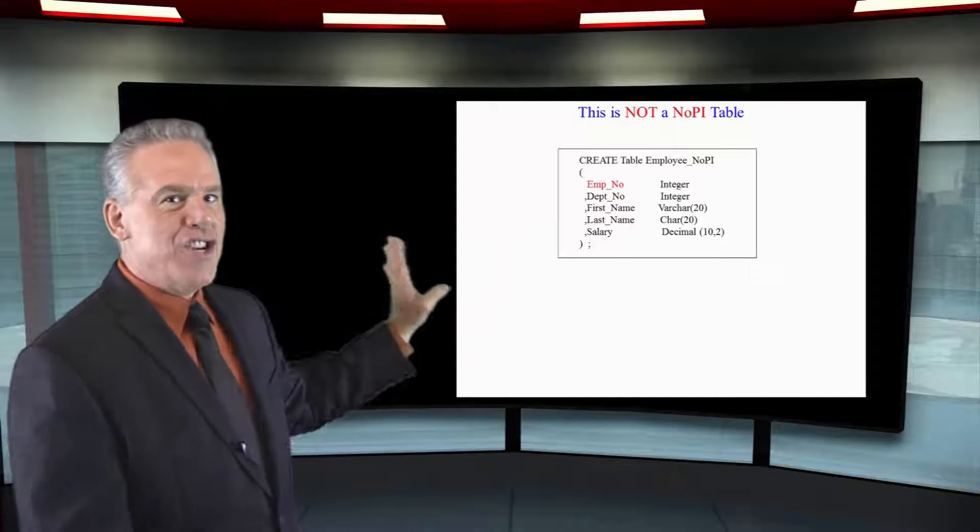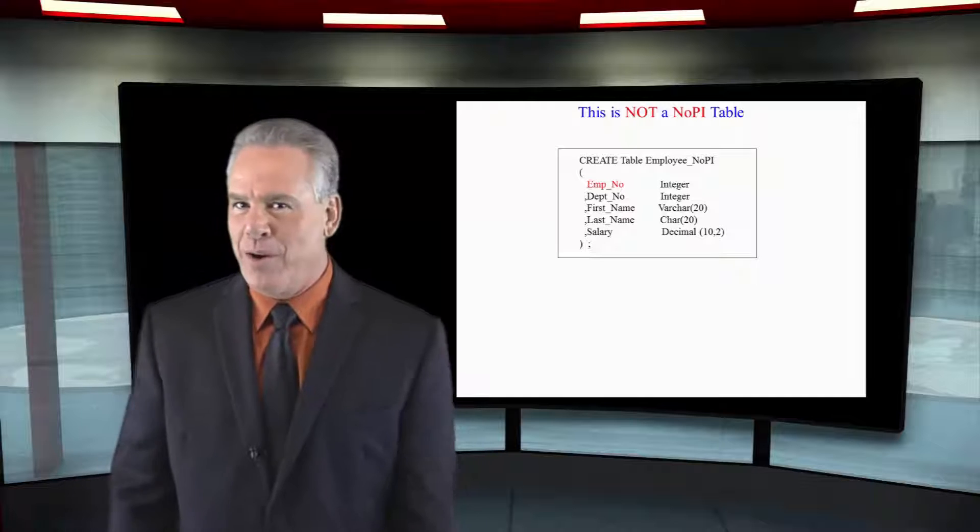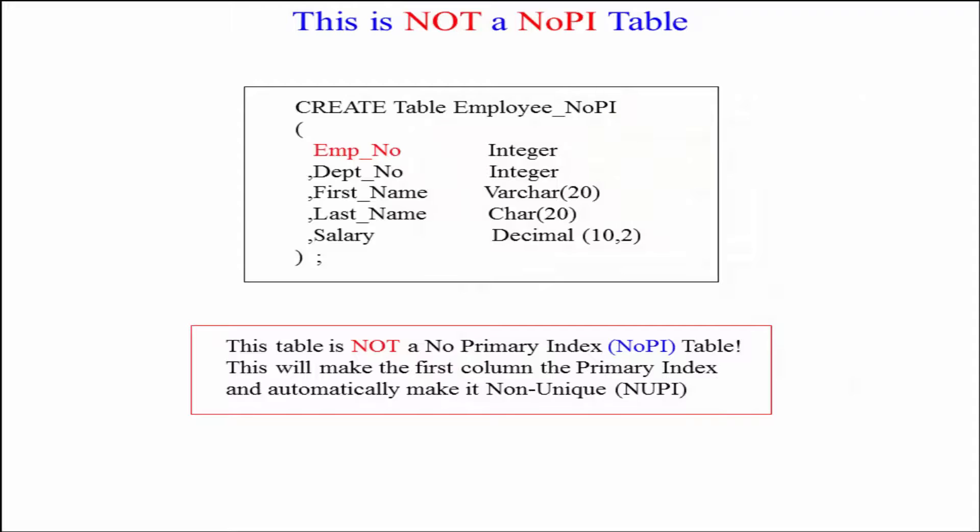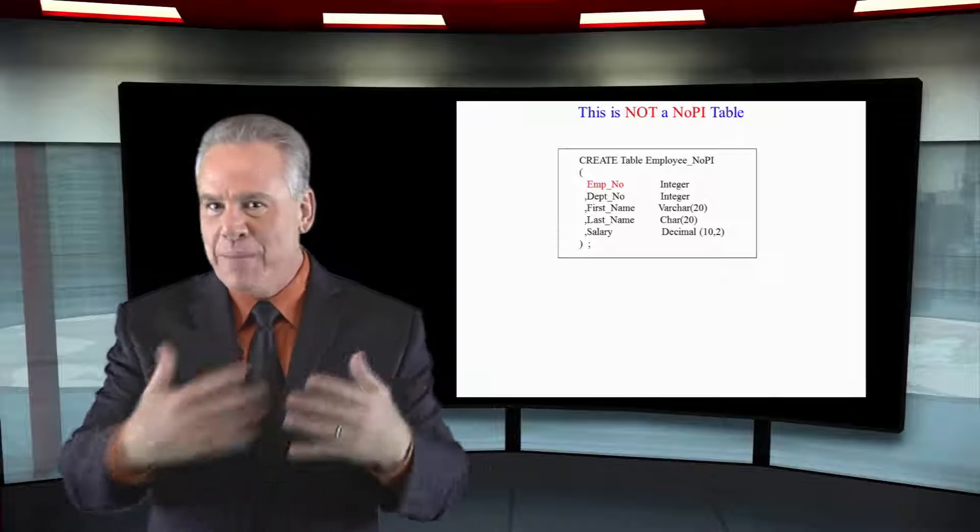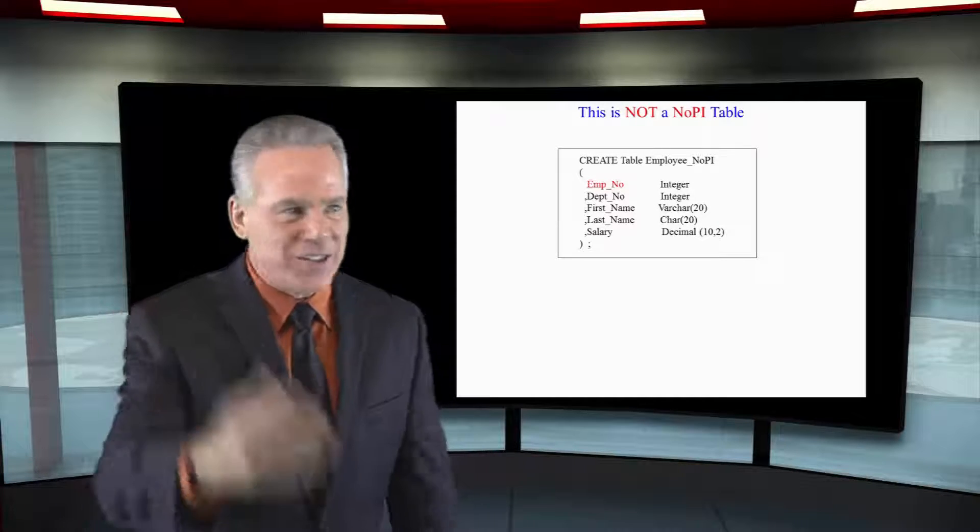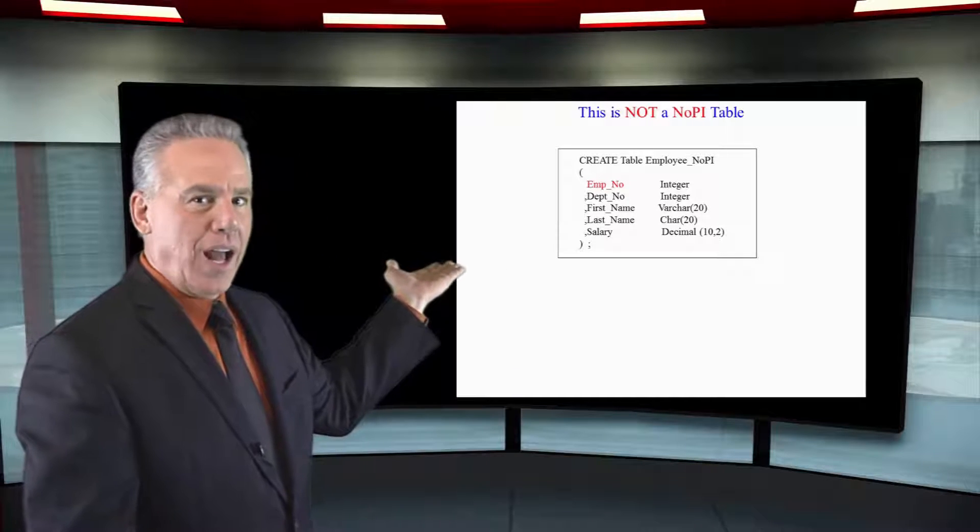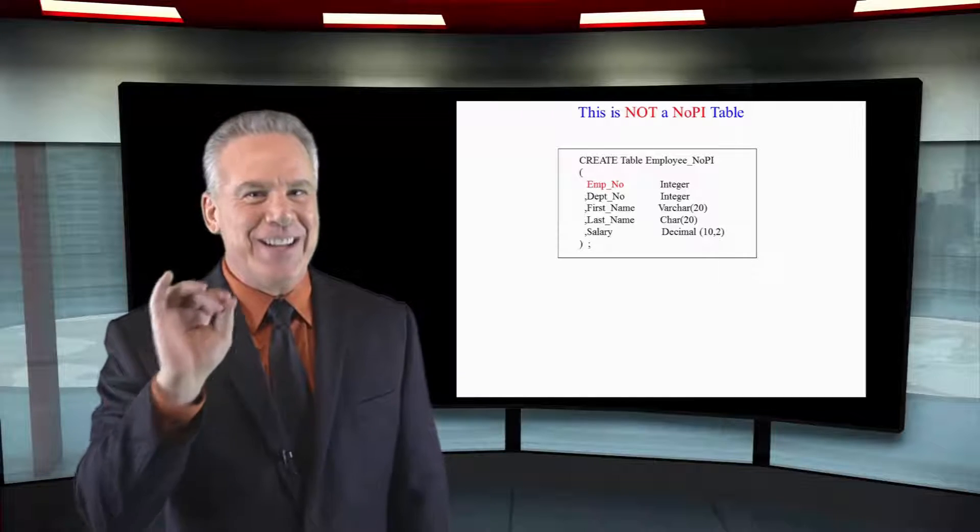This is not a no primary index table. You see we've just forgotten to put the primary index in and most of the time when this happens, Teradata says oh they probably work with Oracle, I'm going to help them out. I'll make the first column a non unique primary index. So realize right now that there's the no primary index statement and then there's the whoops I forgot to put it on and those are two different scenarios.